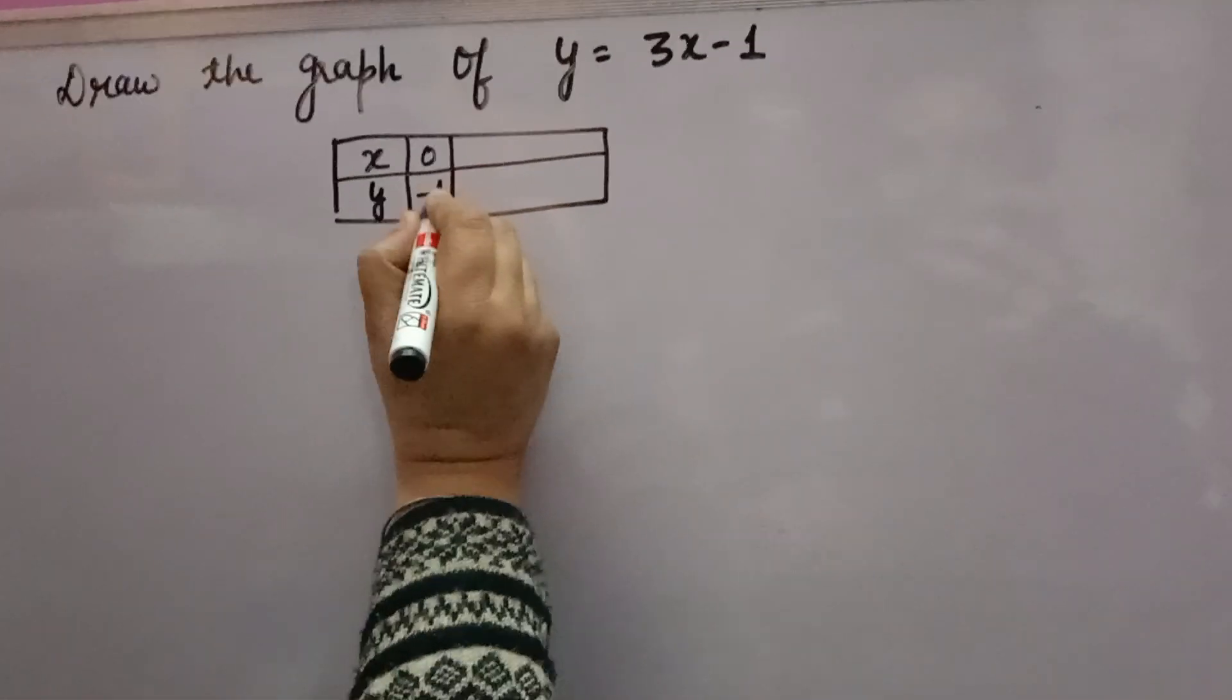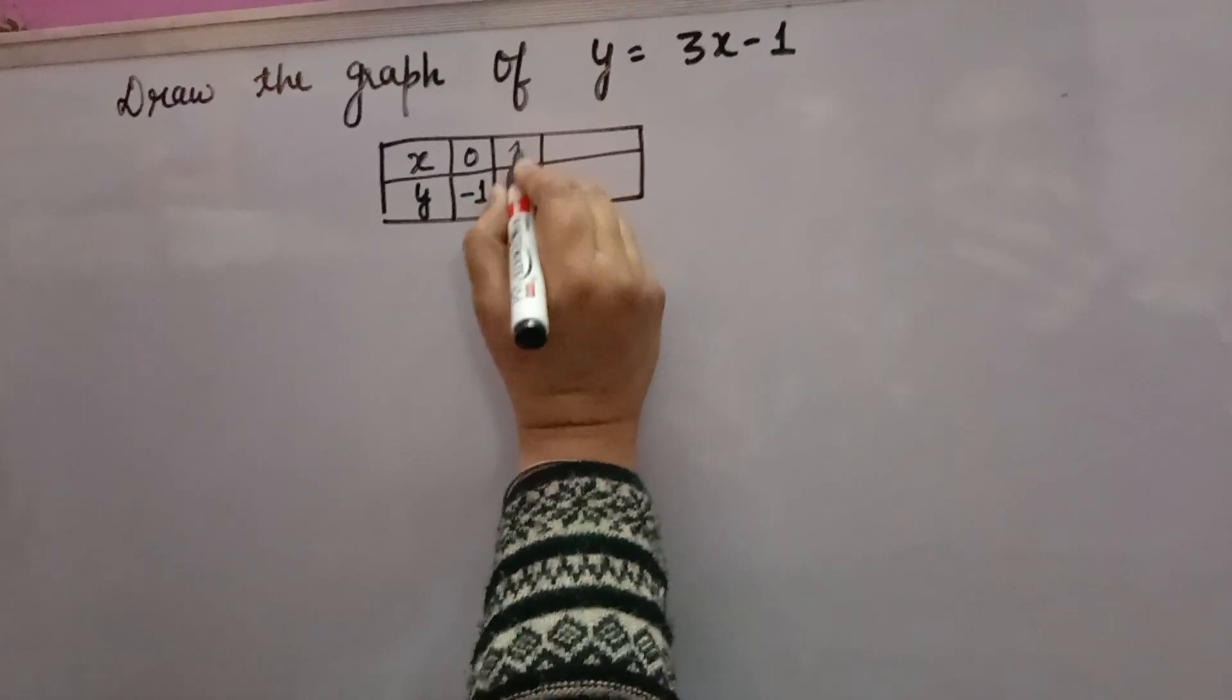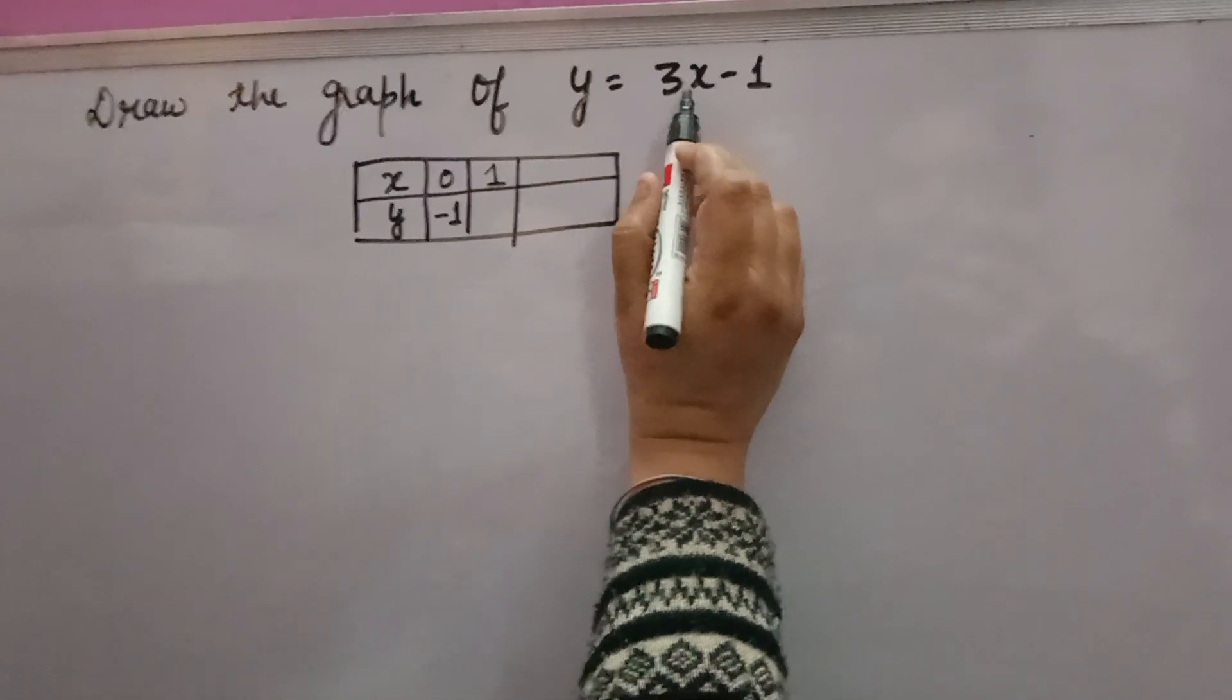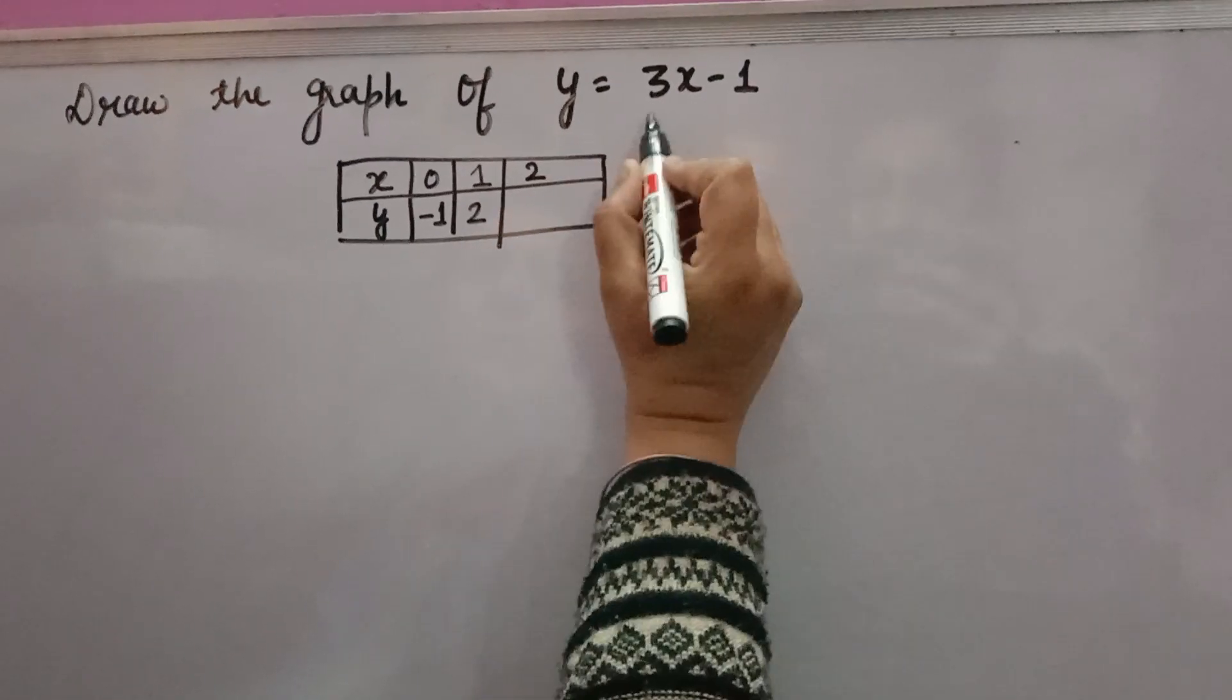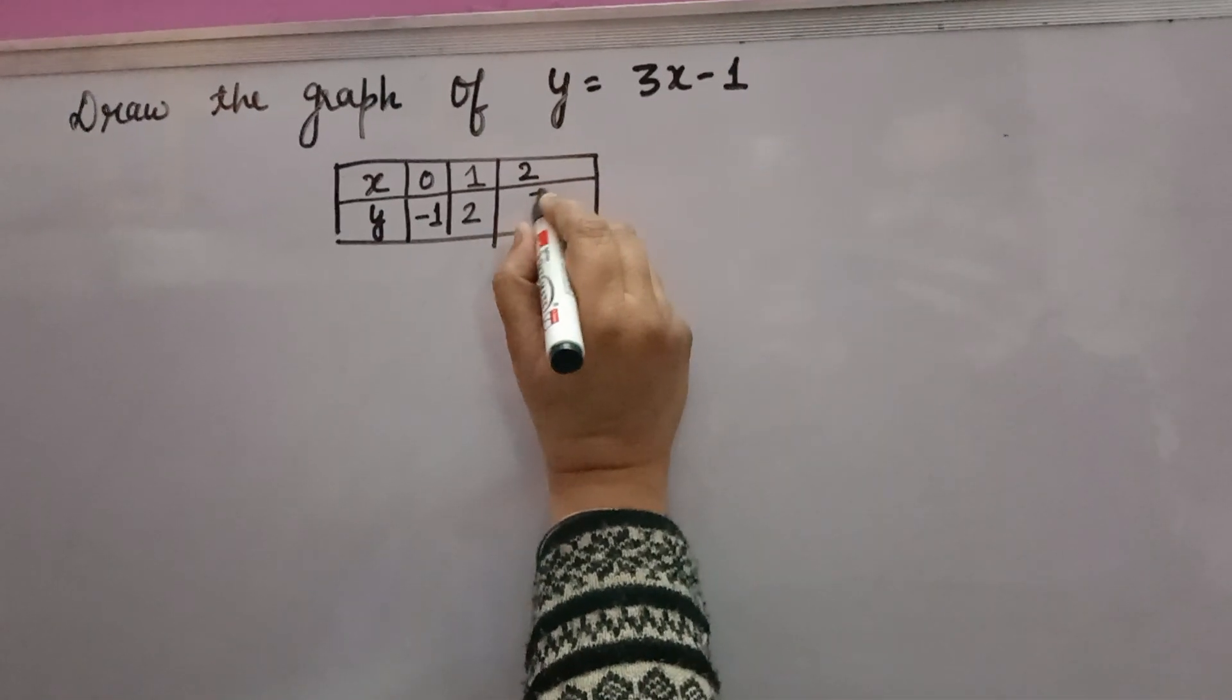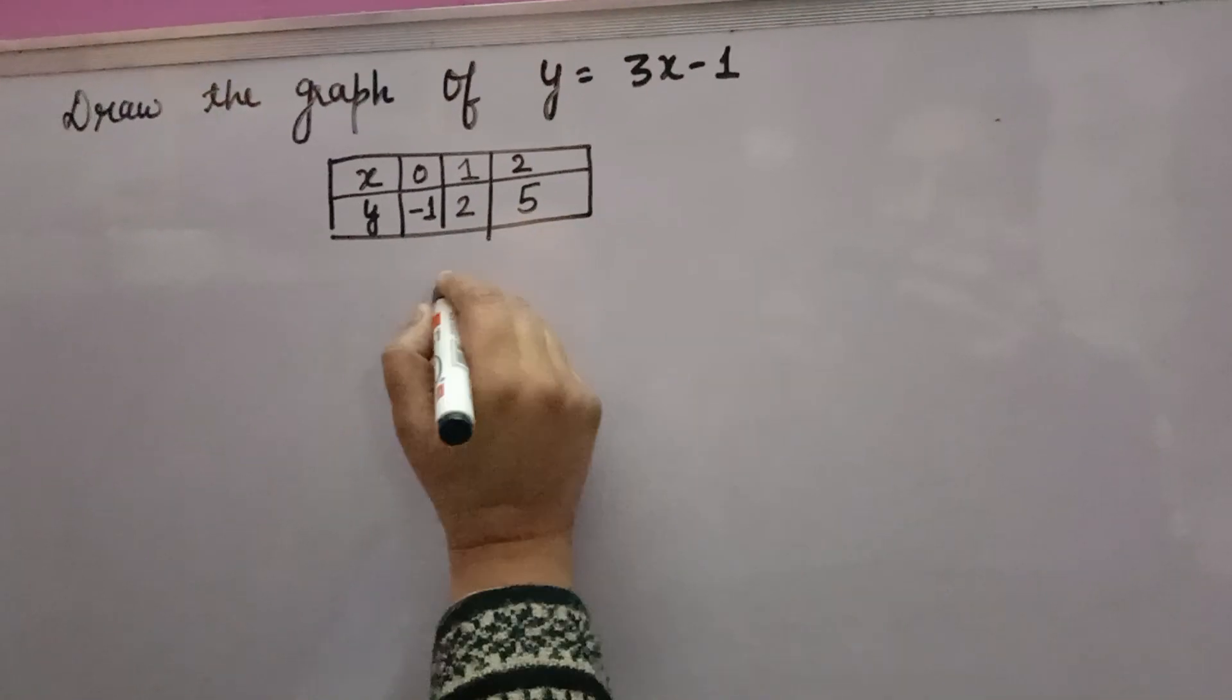You will get minus 1. Suppose x is 1: you will get 3 into 1 which is 3, 3 minus 1 is 2. Suppose x is 2: 3 into 2 is 6, 6 minus 1 is 5. So any three values you can take.